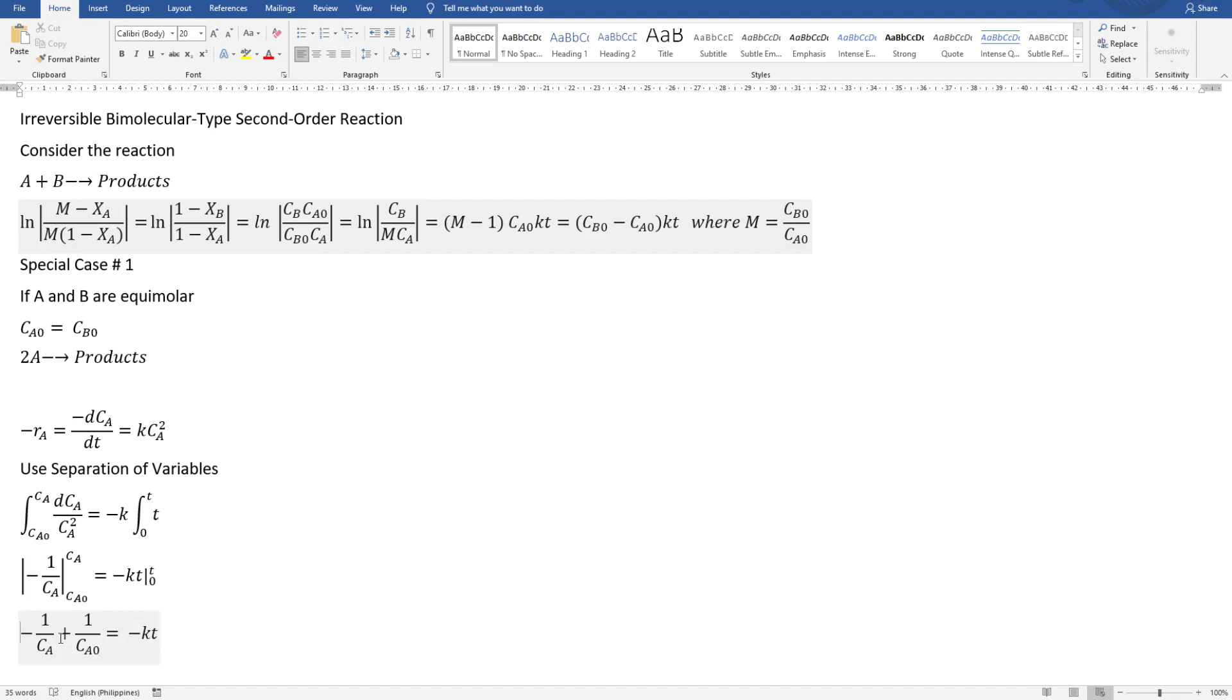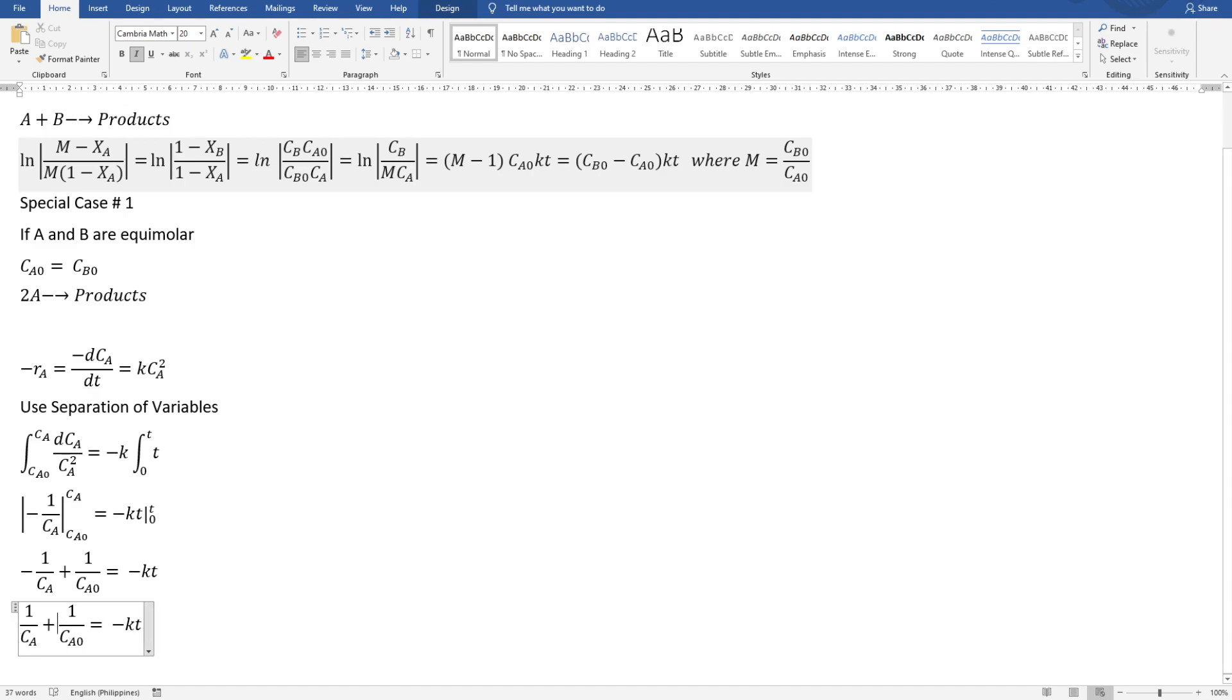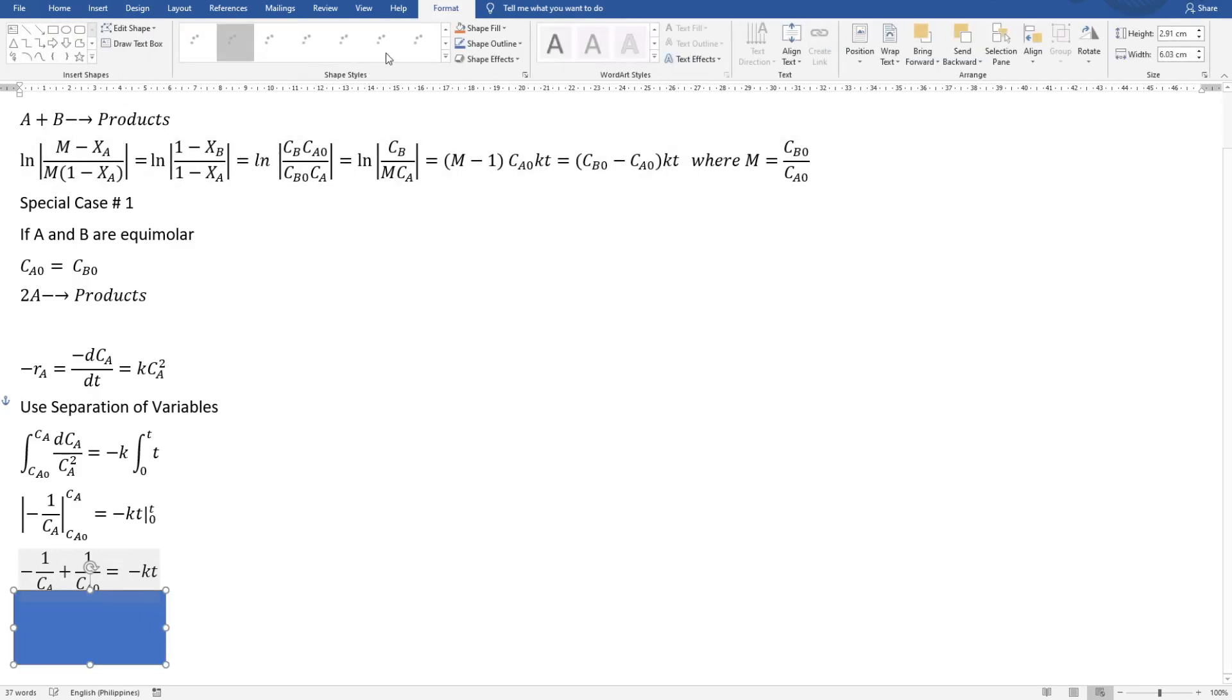Then rearranging, we will be getting this equation. In terms of concentration, the equation that you will be using is this one, 1 over CAO. Very familiar, right? For a second order.